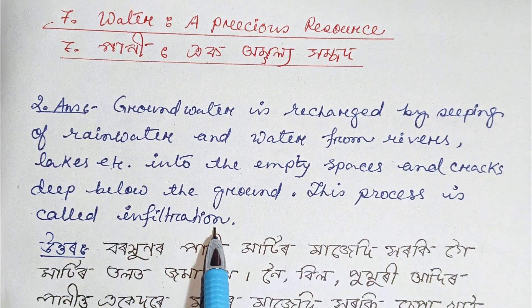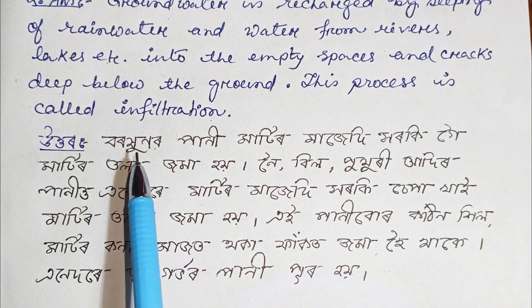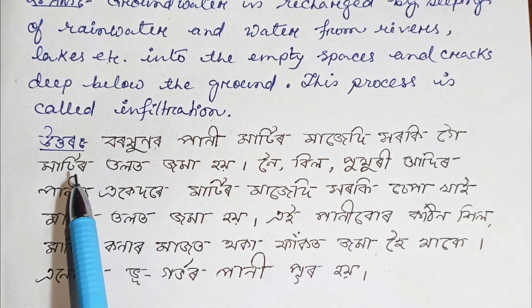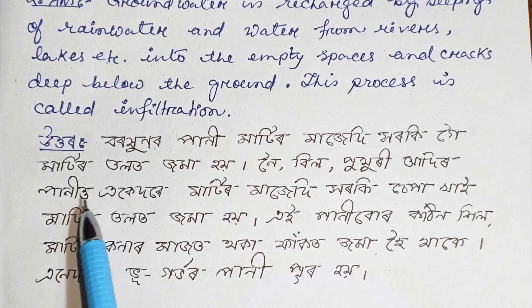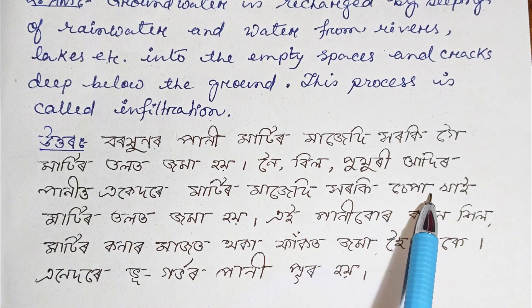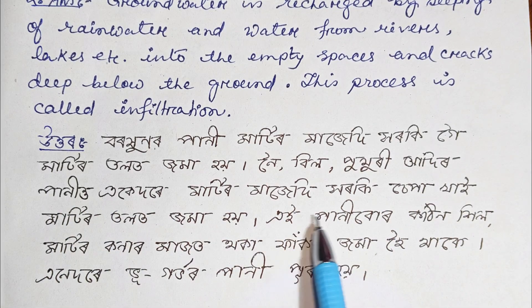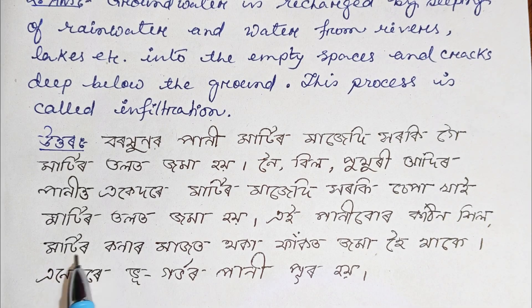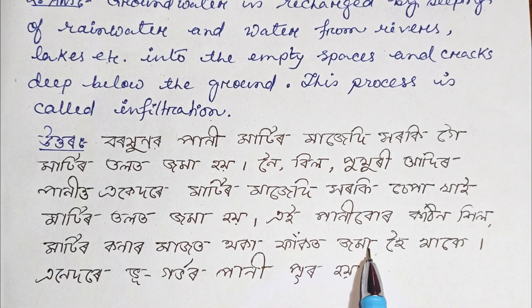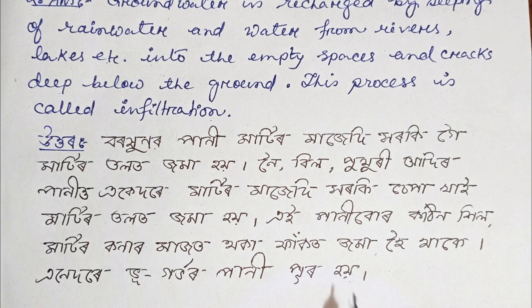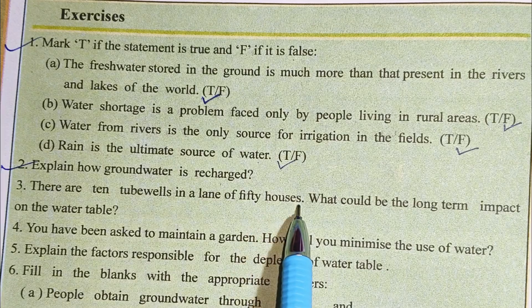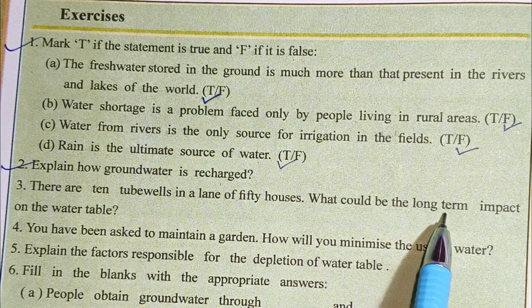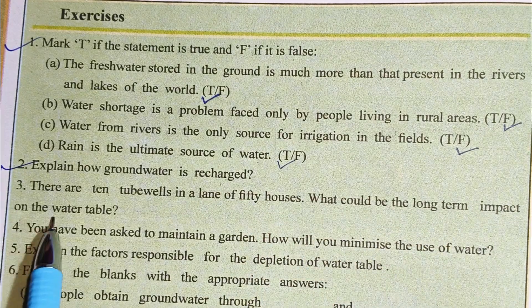Question 3: There are 10 wells in a land of 50 houses. What could be the long-term impact on the water table?